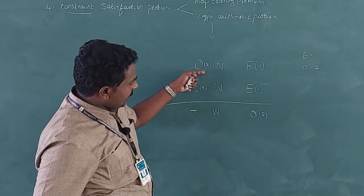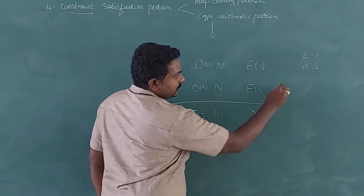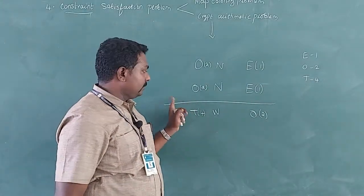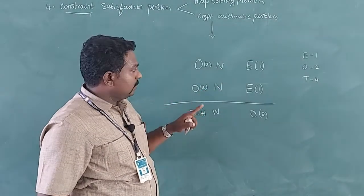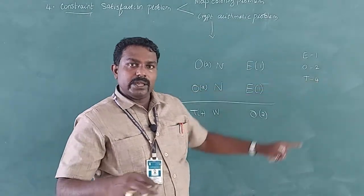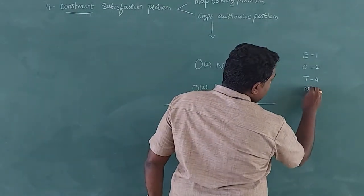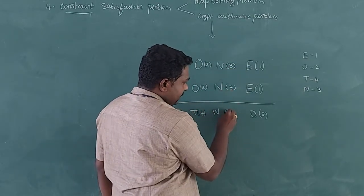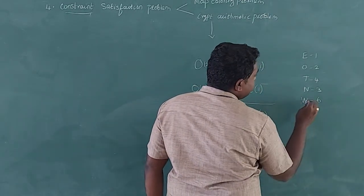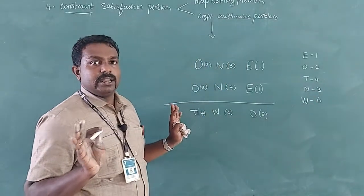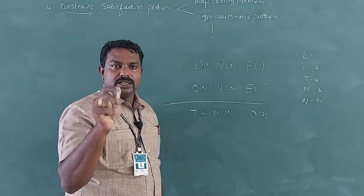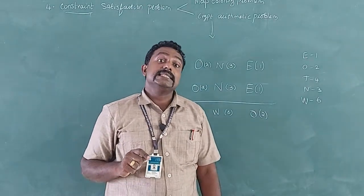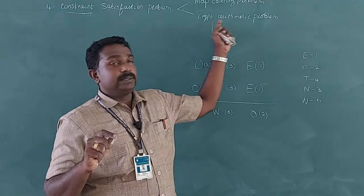Now adding the O values: 2 plus 2 gives 4, so T is assigned 4. The remaining letter is N. Since 1 and 2 are already used, N is assigned 3. So we have 3 plus 3 equals 6, meaning W is assigned 6. The problem is now solved: each alphabetic letter has a different number. This is the Constraint Satisfaction Problem applied to Crypt Arithmetic.